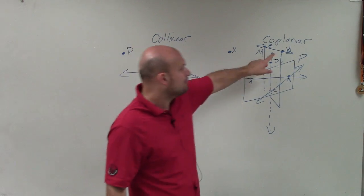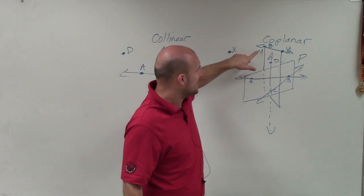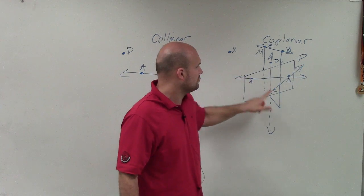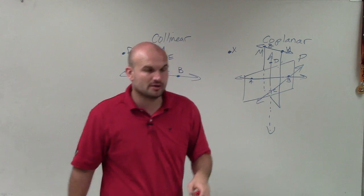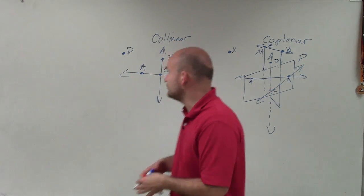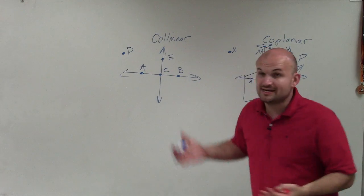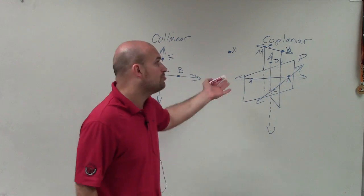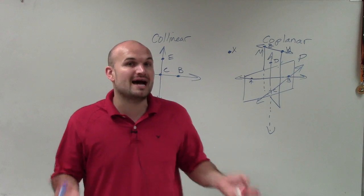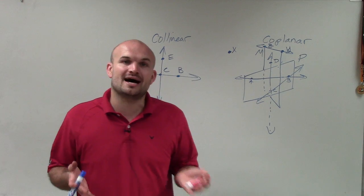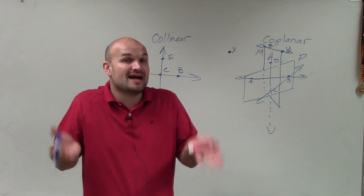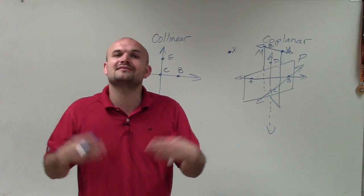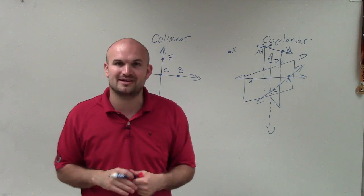The same thing with the points — since these points are on plane M but not on plane P, they are not coplanar with the other three points. So just to review: collinear is when you have points that are on the same line. Coplanar is when you have points or lines that all lie on the same plane. If they are not collinear, they're non-collinear. If they're not coplanar, they are non-coplanar. Thanks.